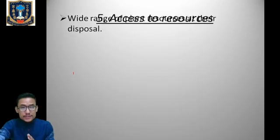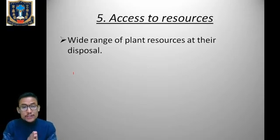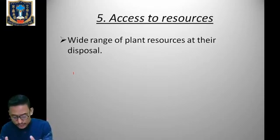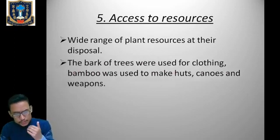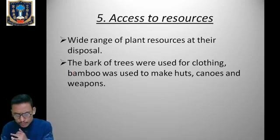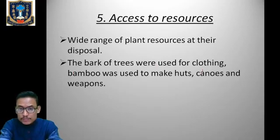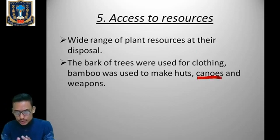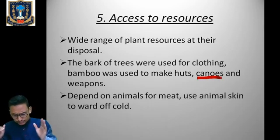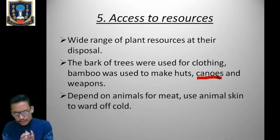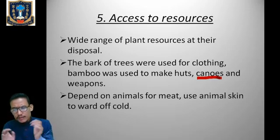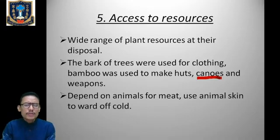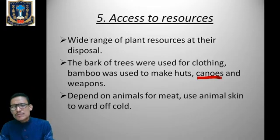Regarding access to resources: hunter-gatherers had a wide range of plant resources at their disposal — variety of nuts, fruits, vegetables, roots, and cereals were consumed. The bark of trees was used for clothing, and bamboo was used to make herds, canoes, and weapons. Hunters were not only dependent on animals for meat but also used the skin of animals to ward off the cold in cold climatic conditions.